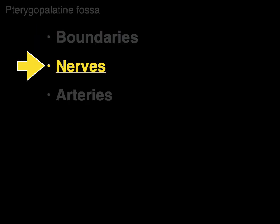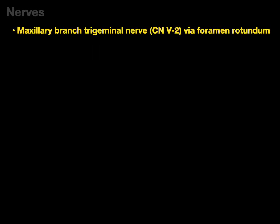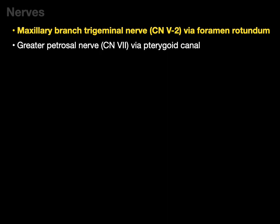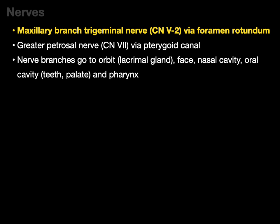Now let's talk about the nerves. The maxillary branch of the trigeminal nerve, or V2, will enter the pterygopalatine fossa via the foramen rotundum — that's the big contribution. We also have the greater petrosal nerve, which is a branch of CN7, the facial nerve, entering via the pterygoid canal. The nerve branches then go all over the place: to the orbit, to the lacrimal gland, to the face, to the nasal cavity, the oral cavity, the teeth and palate, and to the pharynx.